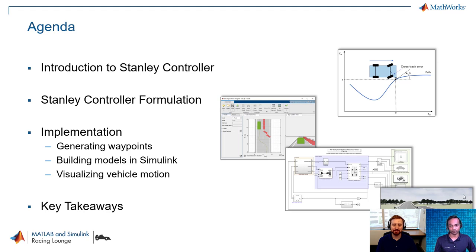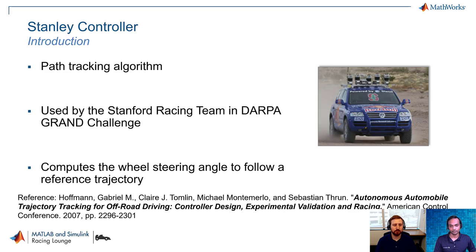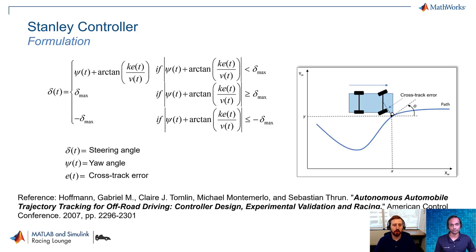We are going to focus mostly on the implementation part. For those of you that don't know, the Stanley controller has been around for a little while and it's actually a path tracking algorithm. It was first used in real life by the Stanford racing team in the DARPA Grand Challenge. It computes the steering wheel angle to follow a reference trajectory. We've taken this formula from the reference provided — if you want to know more you can refer to the paper.